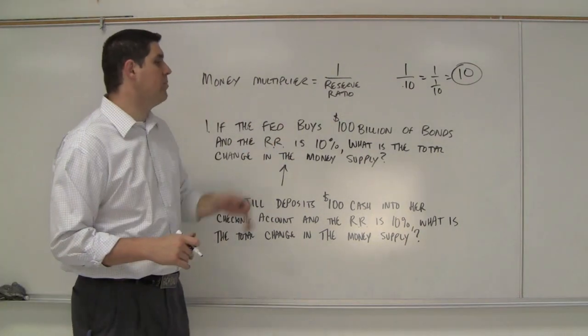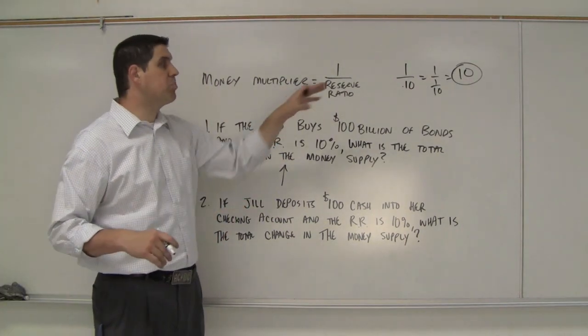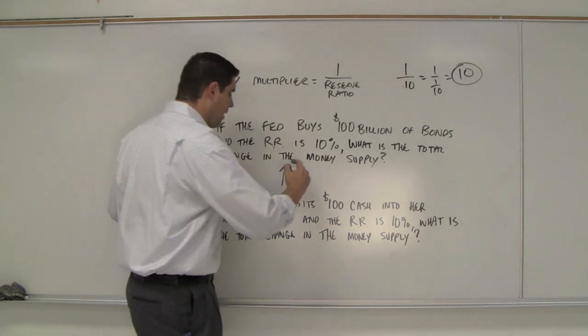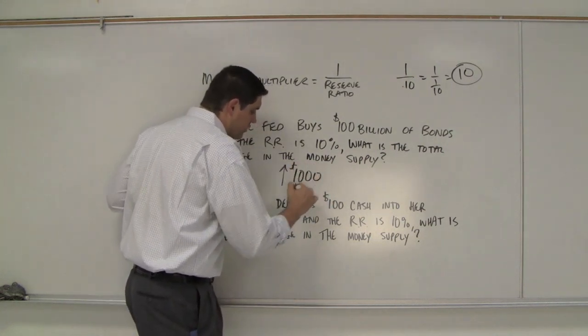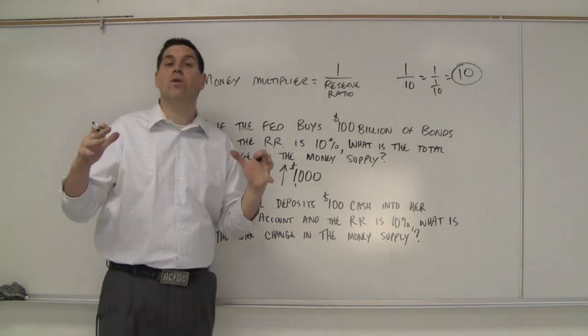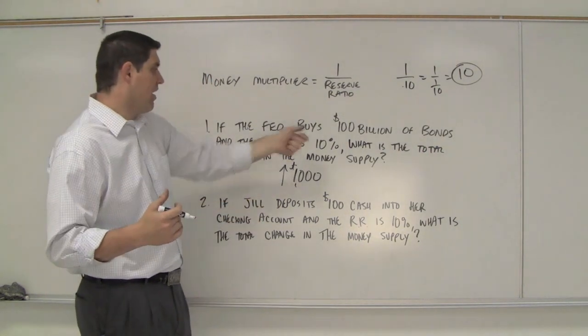Any amount of money that comes into the system is going to get multiplied times 10. So when the Fed buys $100 billion of bonds and it gets multiplied times 10, that's going to be $1,000 billion or a trillion dollars. A trillion dollars total increase in the money supply if the government were to do that.